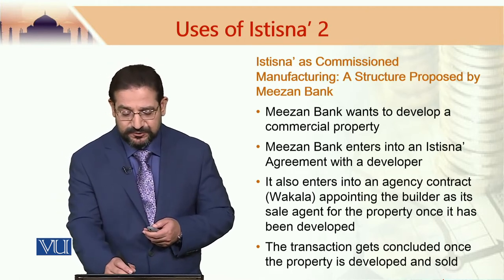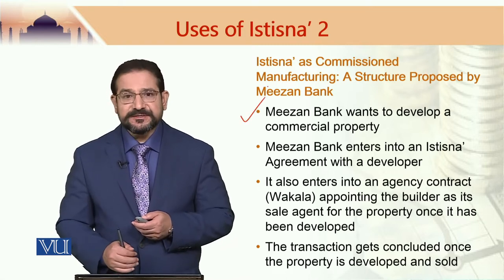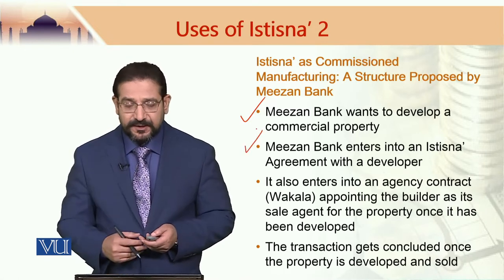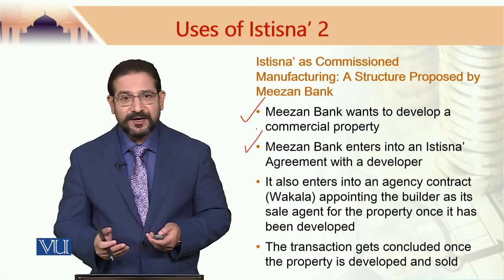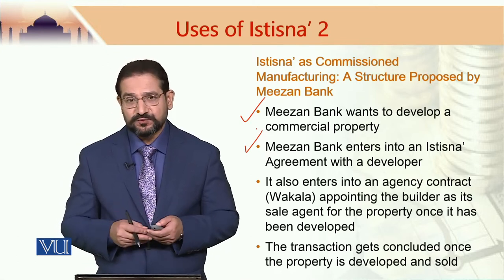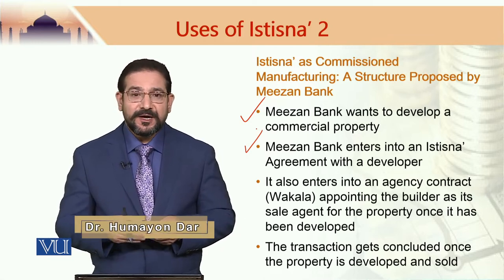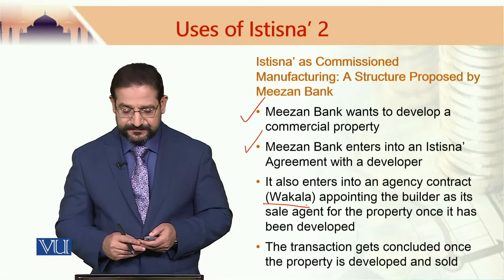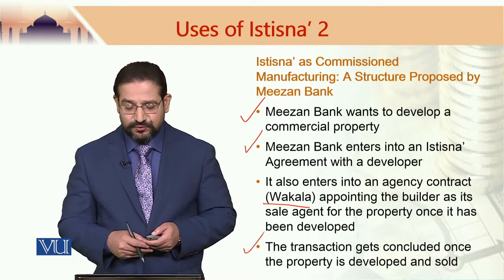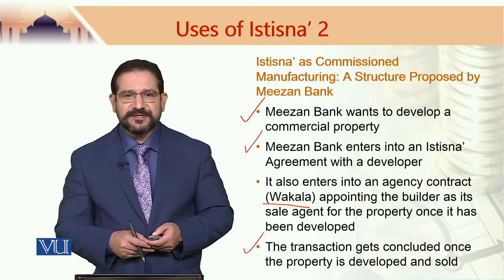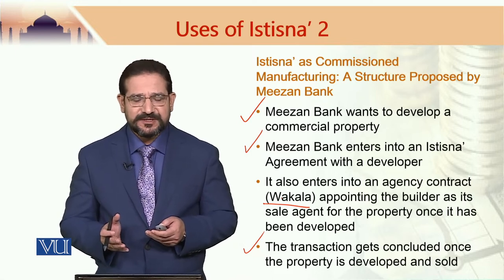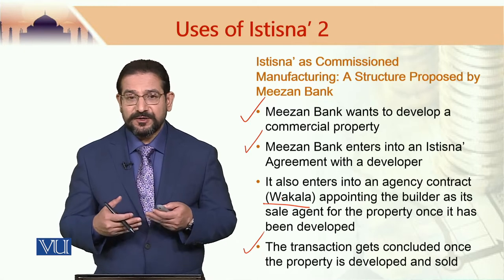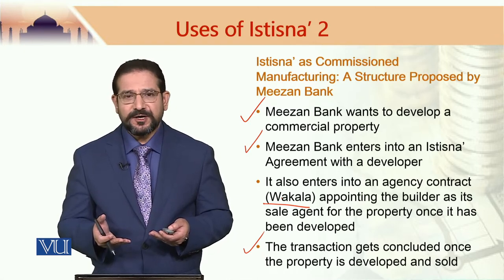Mizan Bank wants to develop a commercial property. Mizan Bank enters into an istisna agreement with a developer. It also enters into an agency — a wakala agreement — with the developer, so that pursuant to this wakala agreement, the developer actually sells the developed property in the market. At the end, the transaction gets concluded once the property is developed and sold. This seems like a very simple structure based on istisna, in which a bank would like to develop a property to sell it in the market to earn some genuine sharia-compliant profit.